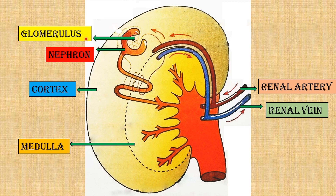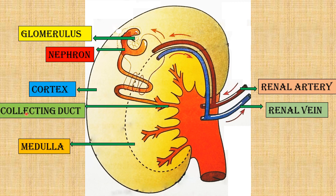The glomerulus is also responsible for filtering the blood. After the blood is filtered, the waste goes down in the form of urine into the collecting duct. The collecting duct collects the waste from the nephron and drains the urine down into the ureter. The ureters are tubes which carry the urine to the urinary bladder and out through the urethra.